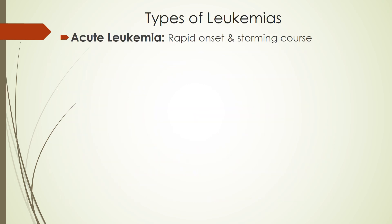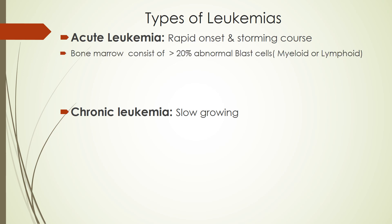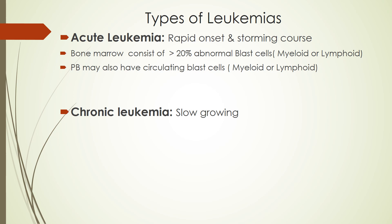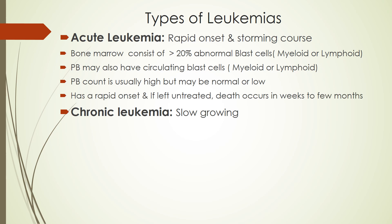Acute leukemia has rapid onset and a very stormy course. It is characterized by a bone marrow consisting of more than 20% abnormal blast cells, which may be myeloid or lymphoid. Peripheral blood may also have circulating blast cells, though in many cases they may be absent. The peripheral blood count is usually high but may be normal or low. If untreated, death occurs in a few weeks to months because of bone marrow failure and other abnormalities.